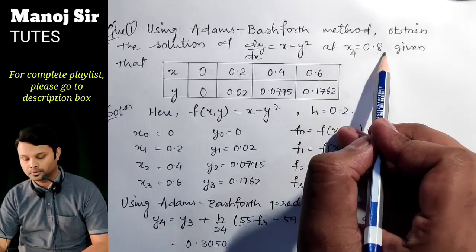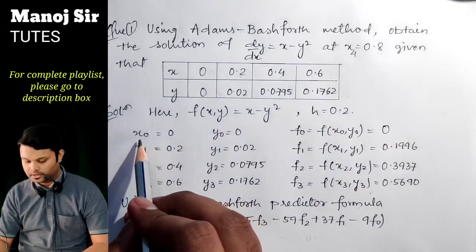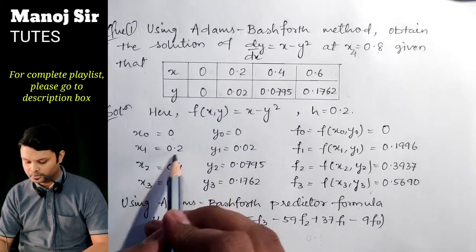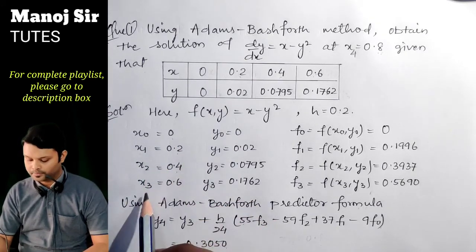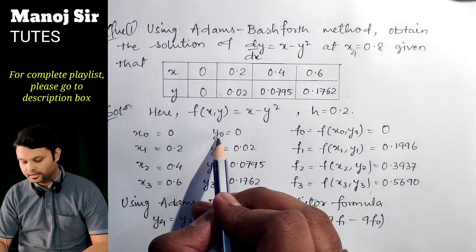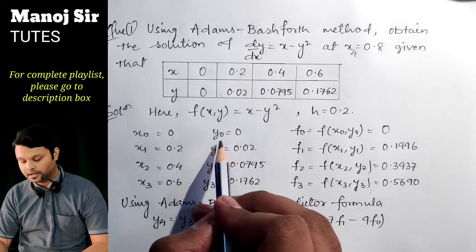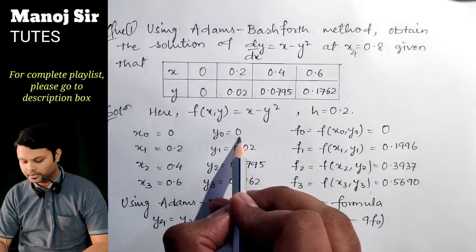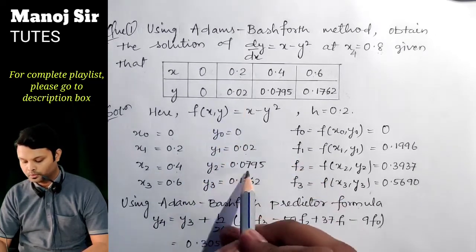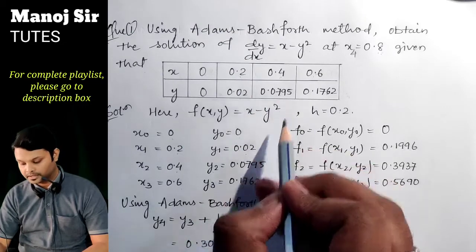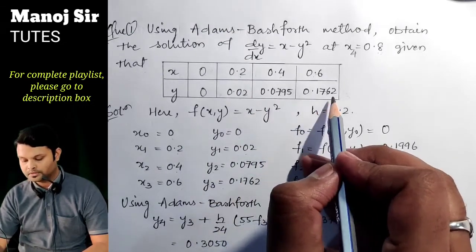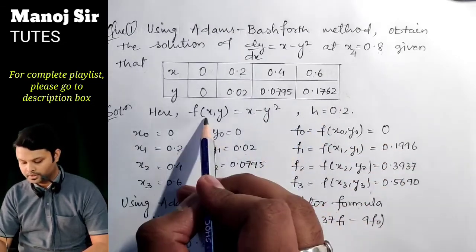From the table: x₀ = 0, x₁ = 0.2, x₂ = 0.4, x₃ = 0.6. The corresponding y values are: y₀ = 0, y₁ = 0.02, y₂ = 0.0795, and y₃ = 0.1762.